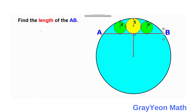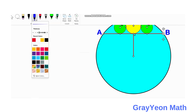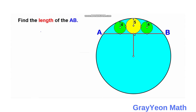We can first draw the segment from the center of the yellow and the green circle, and also downwards from the yellow to the center of the blue circle and from the center of the green to the center of the blue. We also draw a horizontal line from the center of the green to the previous vertical line — so this is perpendicular, and this is also perpendicular. We actually form two right triangles.